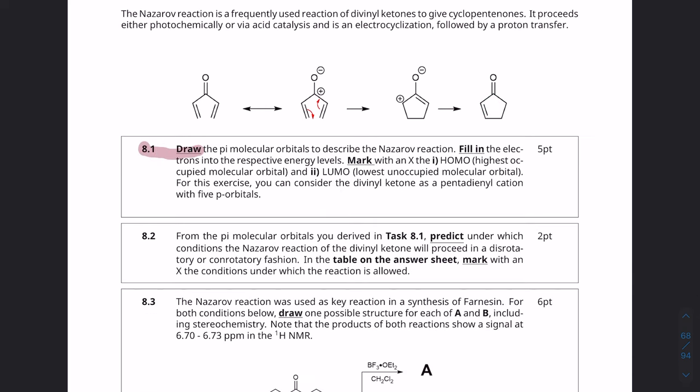So let's read question 8.1. Draw the pi molecular orbitals to describe the Nazarov reaction. Fill in the electrons into the respective energy levels. Mark with an x the HOMO, highest occupied molecular orbital, and the LUMO, lowest unoccupied molecular orbital. For this exercise you can consider the divinyl ketone as a pentadienyl cation with five p orbitals.